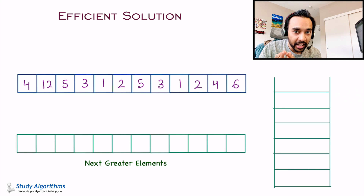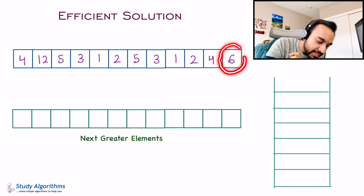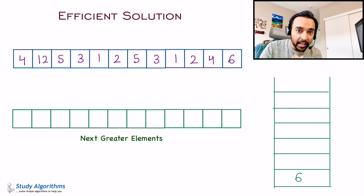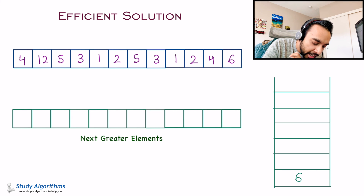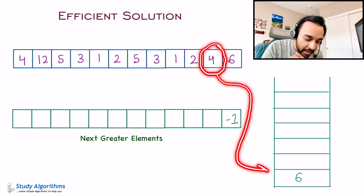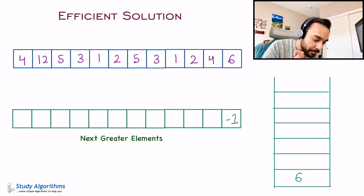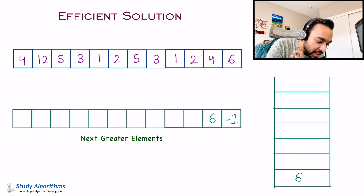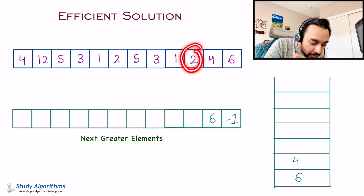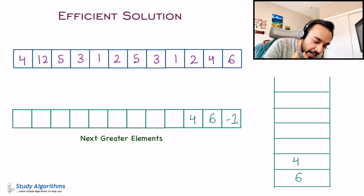Let us say I have this helper stack. We start with the last element, which is 6. The stack is empty, so I add 6 to my stack and write minus 1 in my output result. Move ahead — the next element is 4. Compare it to the top of the stack. Element 4 is smaller than the top element 6, meaning 6 is the next greatest element. So I write down 6 in my output and add 4 to my stack. The next element is 2. Compare with the top — 2 is smaller than 4, so I write down 4 in my output and add 2 to my stack.